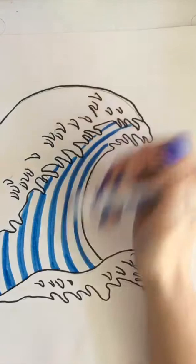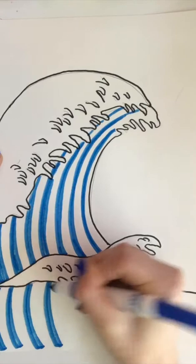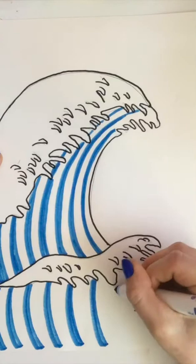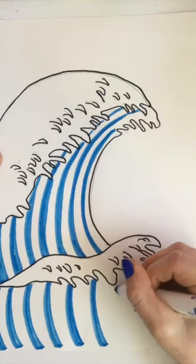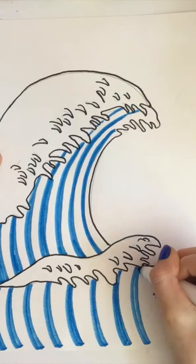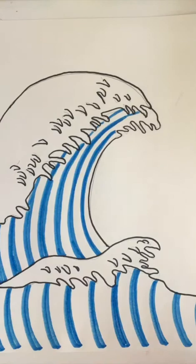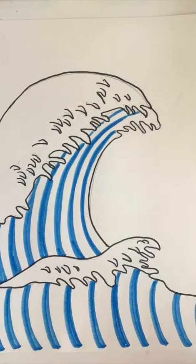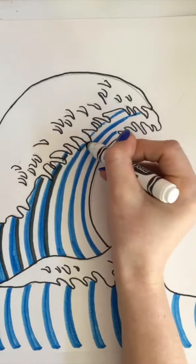I'll do the same down here—not as much of a curve but still with stripes. Now I'll go in with black and green to give more depth to the waves. I'll take my black marker first and add a line on one side to give it depth and a shadow.